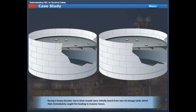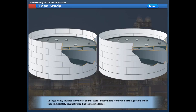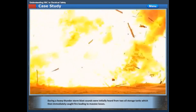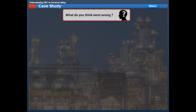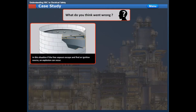During a heavy thunderstorm, blast sounds were initially heard from two oil storage tanks, which then immediately caught fire, leading to massive losses. What do you think went wrong? In this situation, if the free vapors escape and find an ignition source, an explosion can occur.